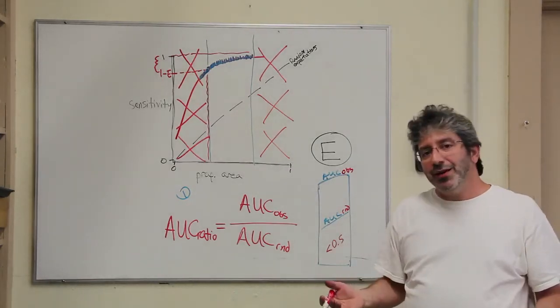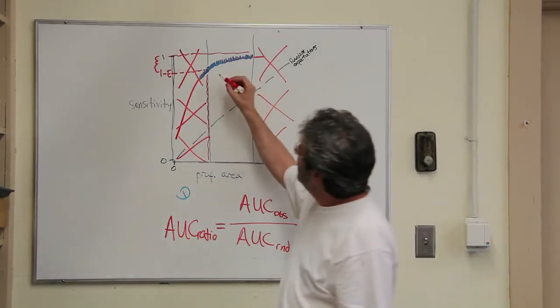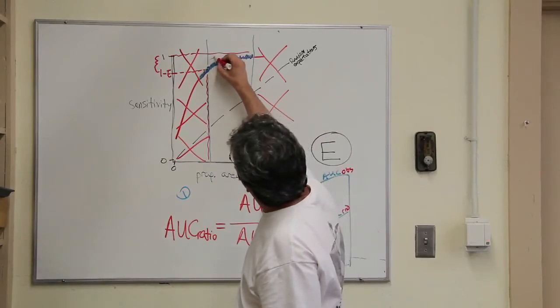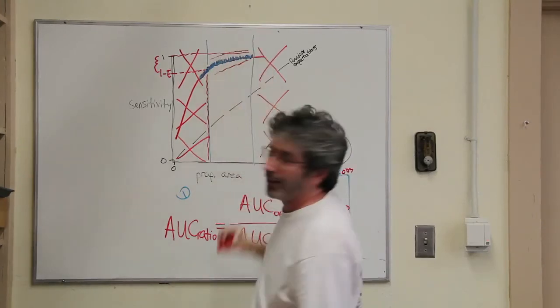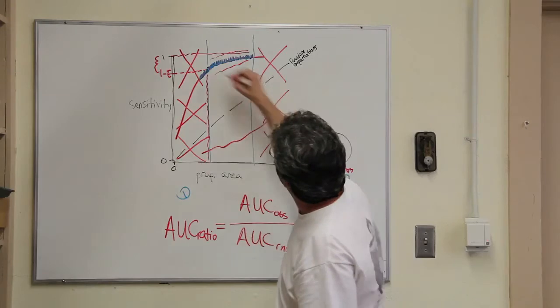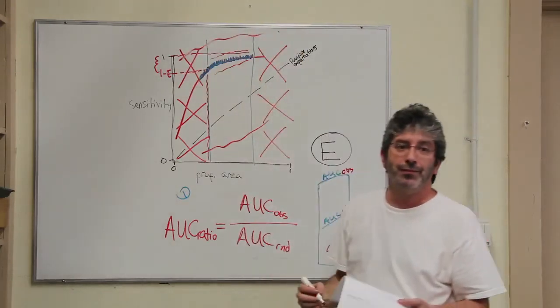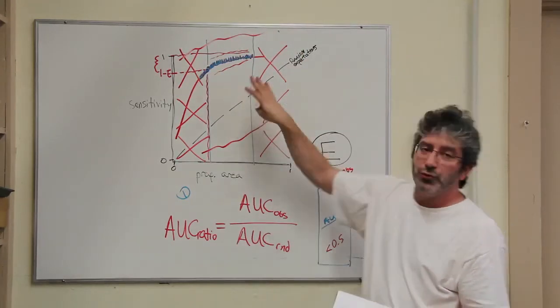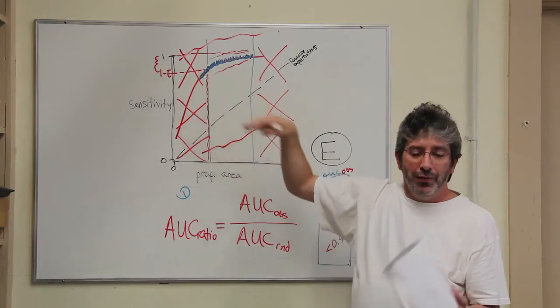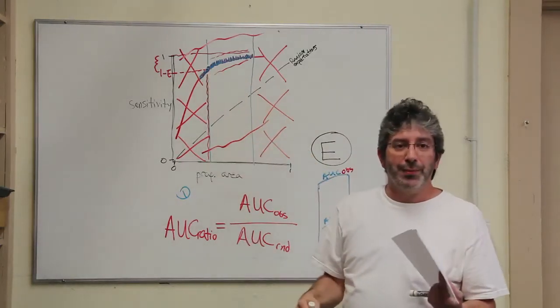Now again, how do we test this? It could be that the true confidence intervals are nice and narrow like this, or they could be really broad like that. So we need to do some sort of test. And the easiest approach to that is bootstrapping.